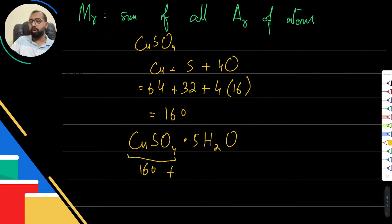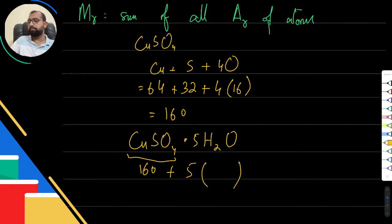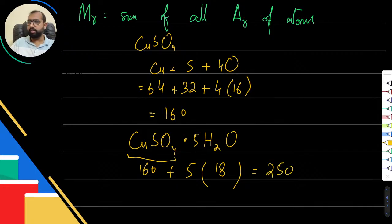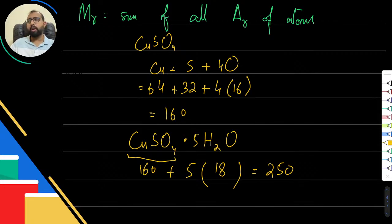Sometimes we encounter hydrated salts, like copper sulfate with water molecules — written as CuSO₄·5H₂O. This dot means they are loosely bonded together. The Mr of CuSO₄ is 160, and 5 × water (Mr = 18) gives 90, so the total Mr is 160 + 90 = 250. This is water of crystallization.